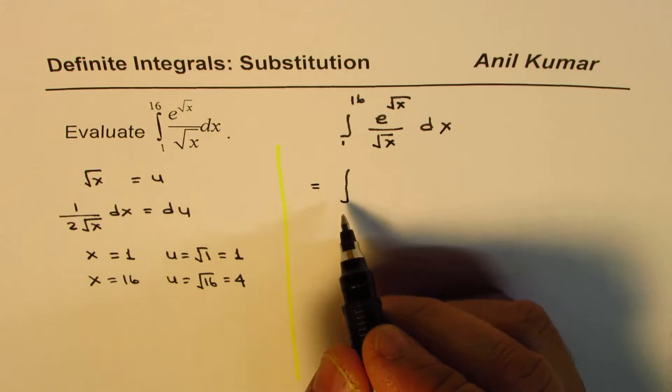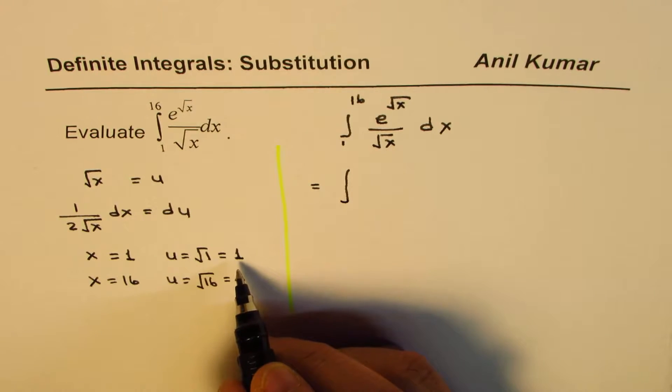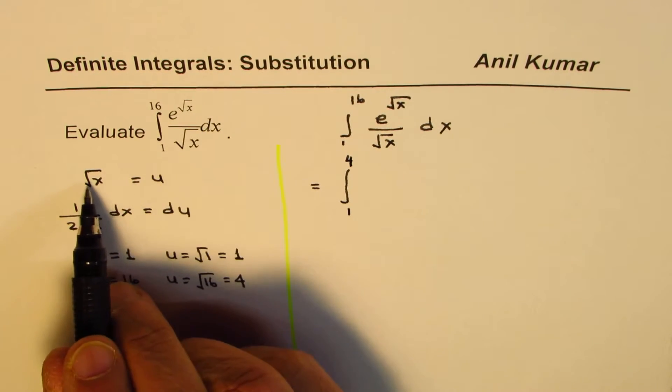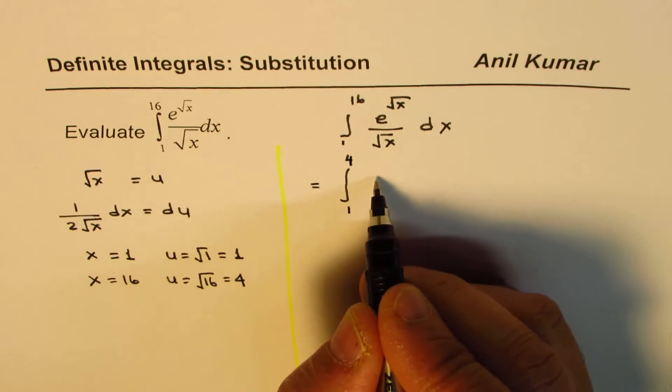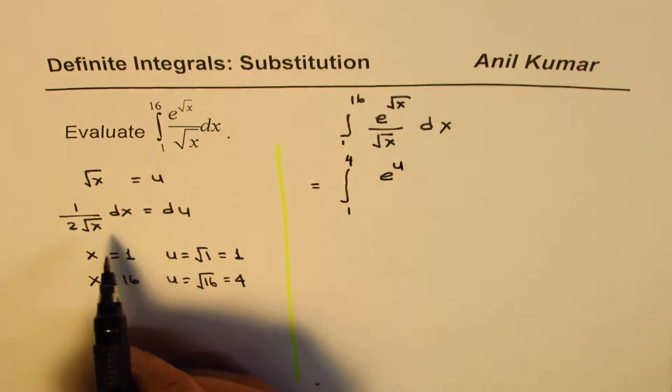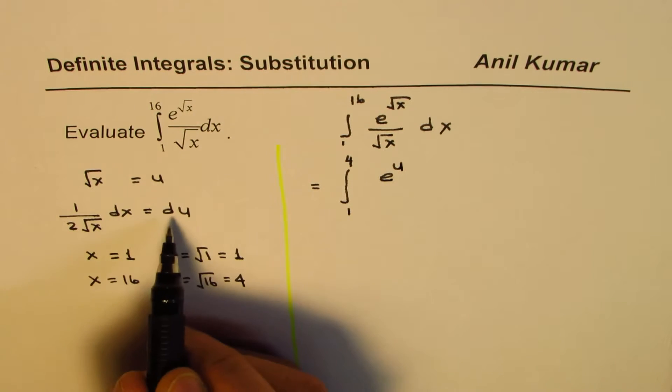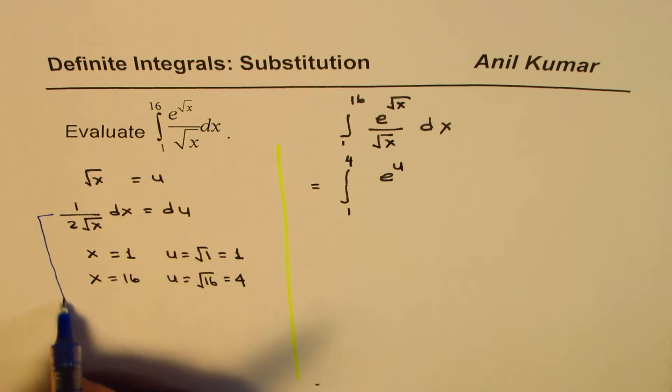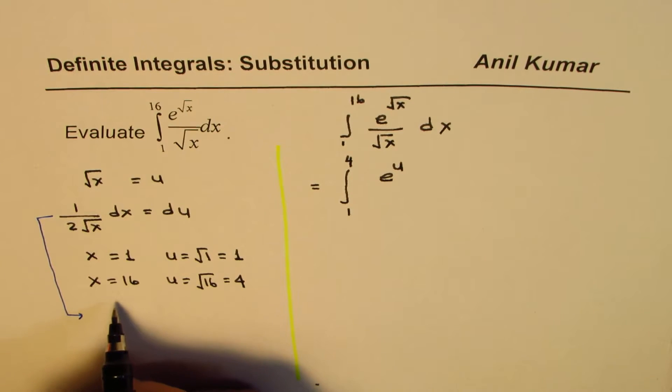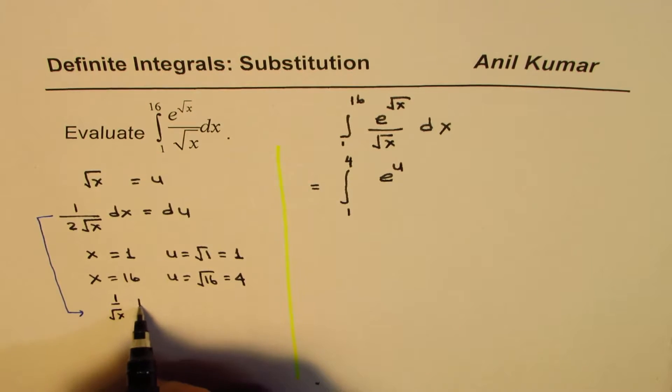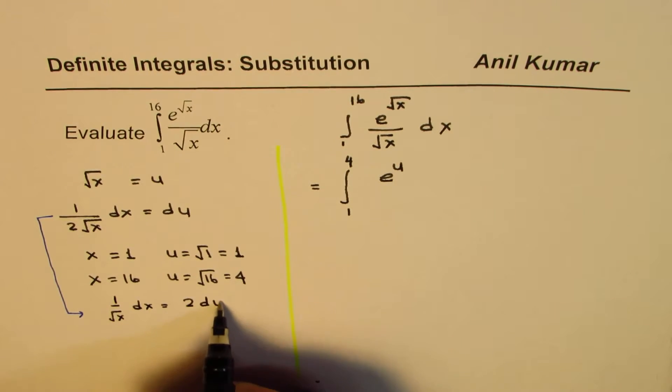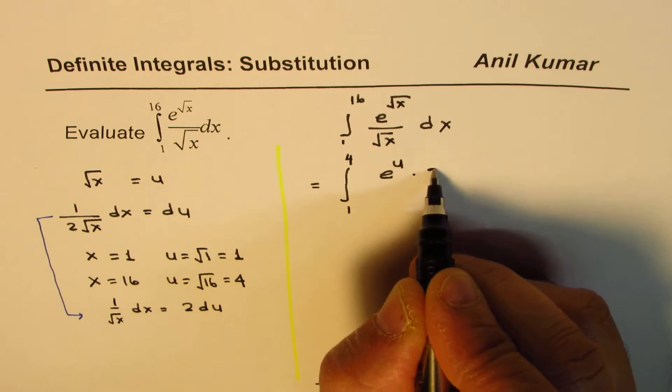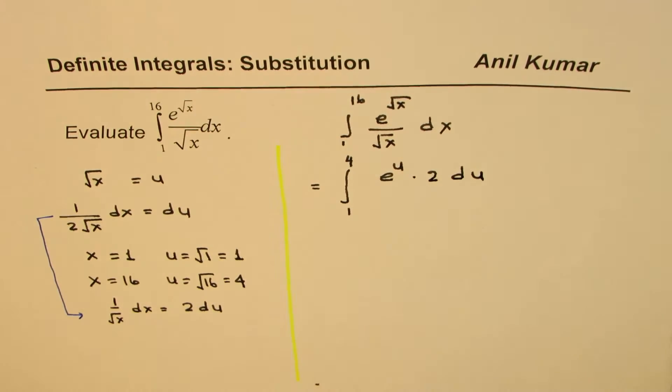Using the substitution we know that the interval of integration will now be from 1 to 4. So we have e to the power of u since square root of x has been substituted as u. And what we have here is dx over square root x is du. Let me rearrange. 1 over square root of x dx equals 2 du, so we substitute this here. That gives us 2 du.